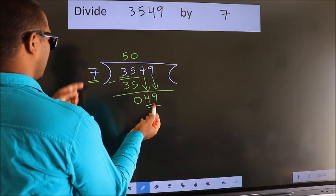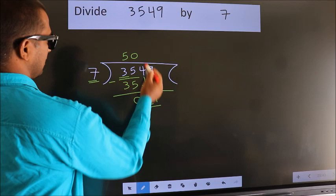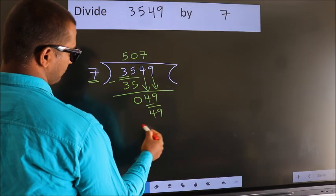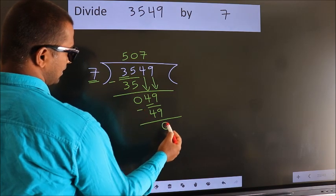When do we get 49? In 7 table. 7 sevens, 49. Now we subtract. We get 0.